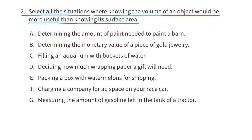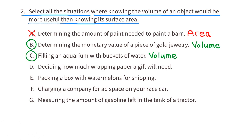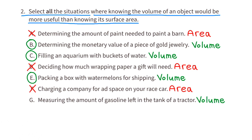Problem 2: I wouldn't choose A because determining the amount of paint needed to paint a barn has to do with surface area. I would choose B because determining the monetary value of a piece of gold jewelry has to do with volume. I would also select C because filling an aquarium with buckets of water has to do with volume. I would not select D because deciding how much wrapping paper a gift will need has to do with surface area. I would select E because packing a box with watermelons has to do with volume. I would not select F because charging a company for ad space on a race car has to do with surface area. And I would select G because measuring the amount of gasoline left in a tractor's tank has to do with volume.